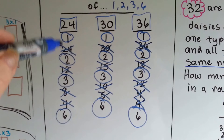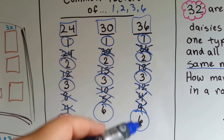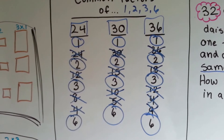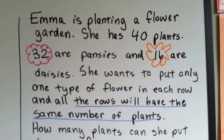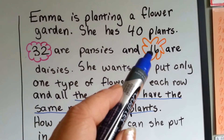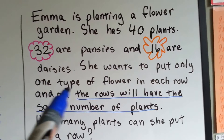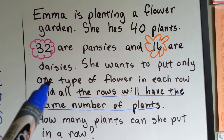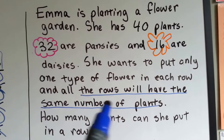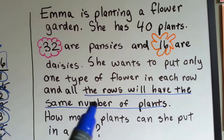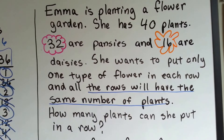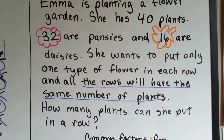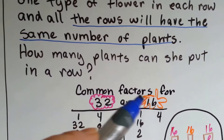Just list the factors of each number and compare them to see which ones are common. Now Emma's going to do some planting. She's got 40 plants — 32 are pink pansies and 16 are orange daisies. She wants only one type of flower in each row and the same number of plants in every row. So how many plants can she put in a row? We need to find the common factors for 32 and 16.